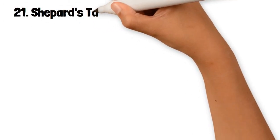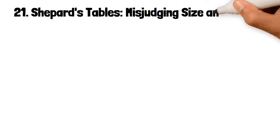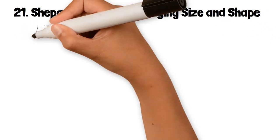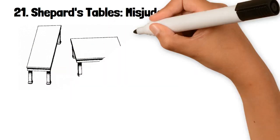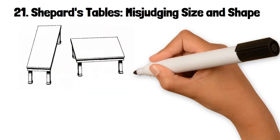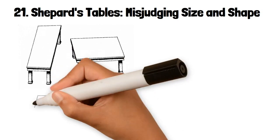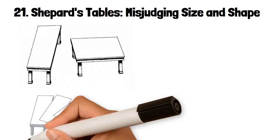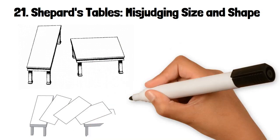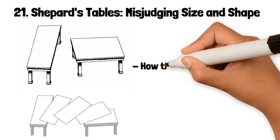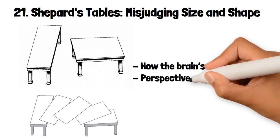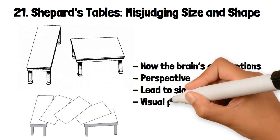21. Shepard's Tables: Misjudging Size and Shape. Shepard's Tables is an optical illusion where two tables of different shapes appear to have different sizes even though they are the same size. The illusion is created by the brain's interpretation of perspective and depth cues leading to a misjudgment of the table's true dimensions. This illusion highlights how the brain's assumptions about perspective can lead to significant errors in visual perception.